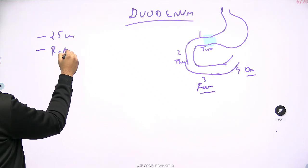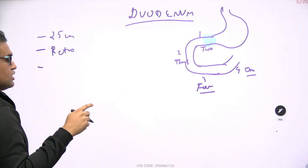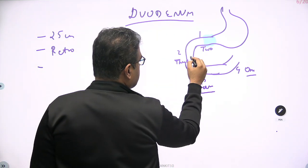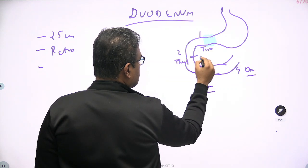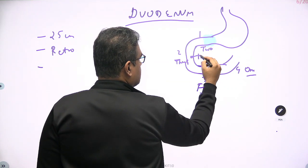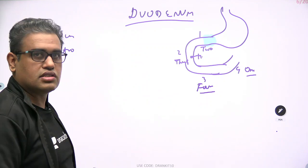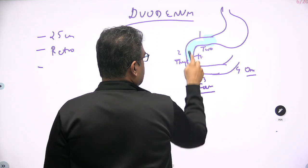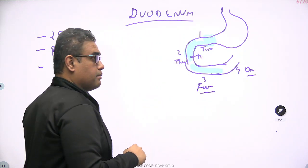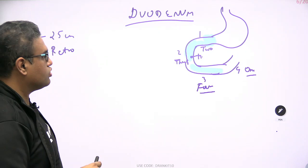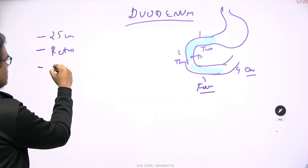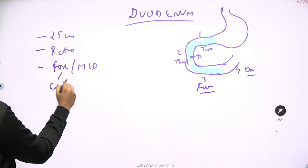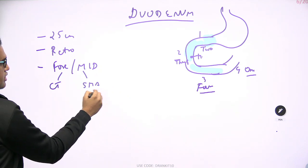The duodenum is mainly a retroperitoneal structure and lies in both the foregut and midgut. In the middle of the second part of the duodenum, on the posteromedial wall, is the opening of the major pancreatic duct — the duct of Wirsung. Proximal to it is foregut, and distal to it is midgut. Therefore, the duodenum is supplied by both the celiac trunk and the superior mesenteric artery branches.